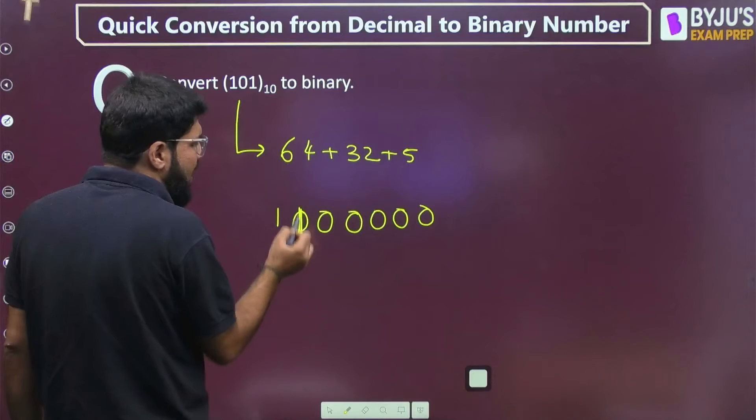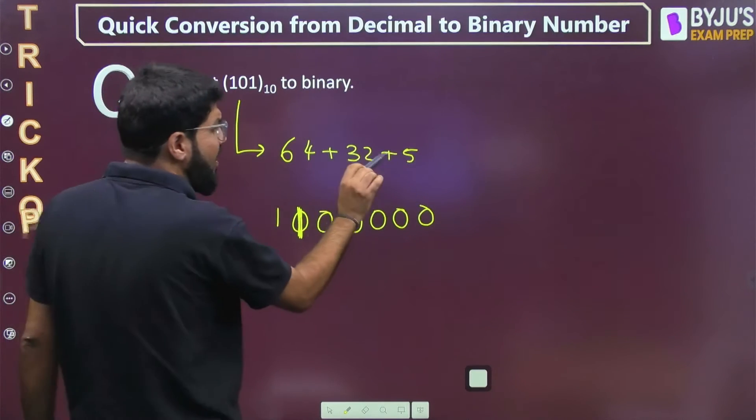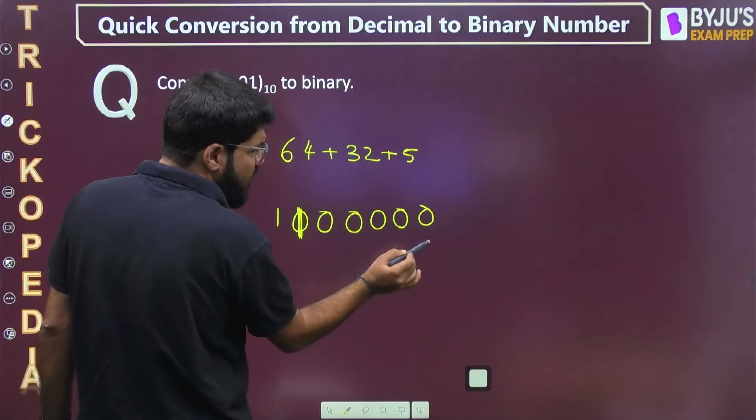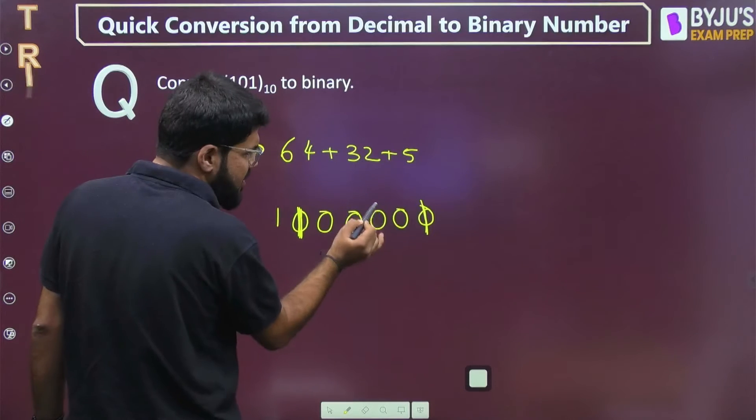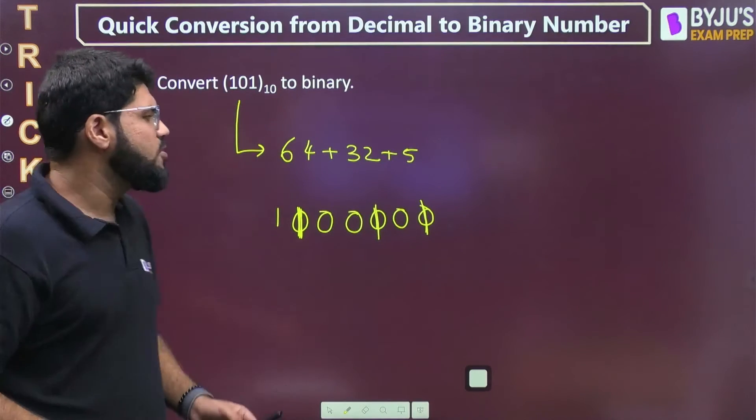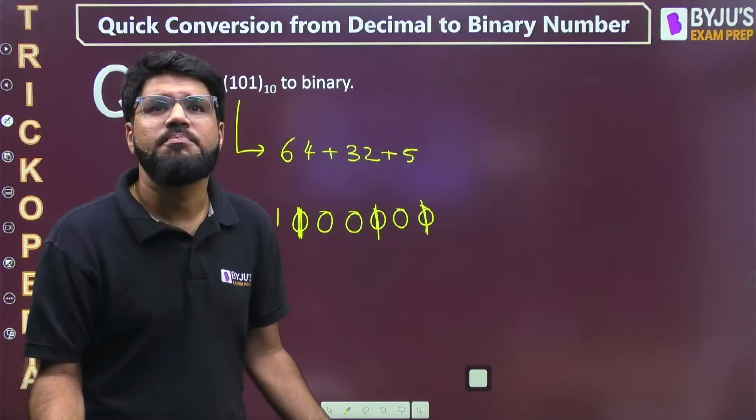What is 5? 101. So if you add, 1 will be added here, then this is 0, and this is 1. Your answer is 1100101. Very simple.